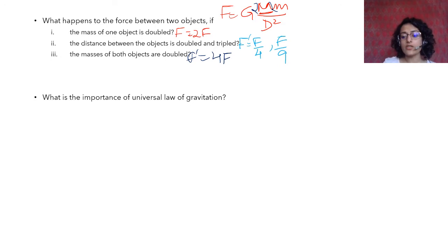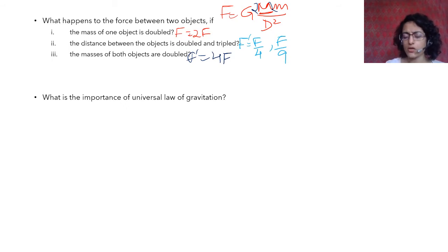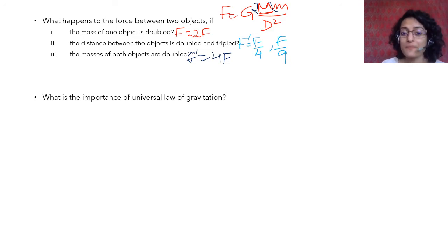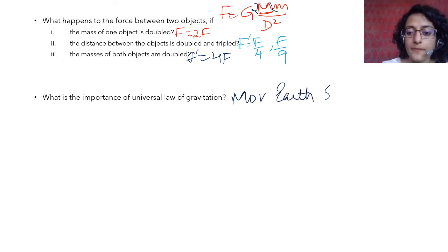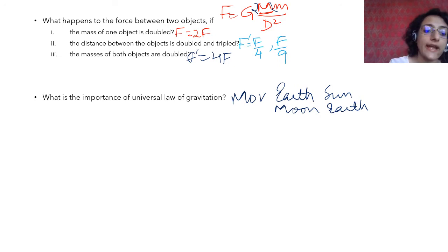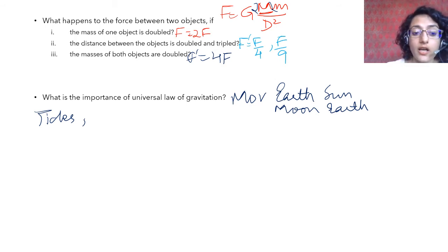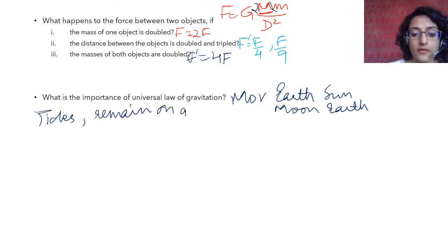What is the importance of the universal law of gravitation? It can explain many things: the movement of the earth around the sun, the moon around the earth, tides, and why we remain on the ground — why things fall down due to gravity.